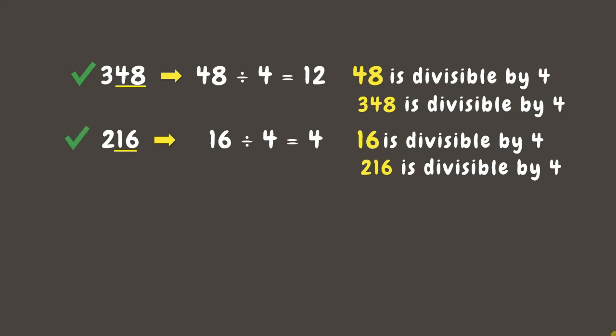Next, consider the number 114. Look at its last two digits. We have number 14. If we divide 14 by 4, the answer would be 3 remainder 2. Since there's a remainder, it means that 14 is not divisible by 4, which makes 114 also not divisible by 4.